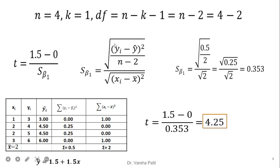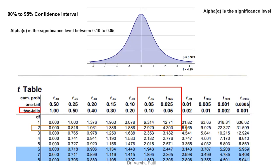The formula for the standard error of beta 1 is applied by putting in our already-calculated values: n minus 2 equals 2, and the summation values from our table. We get the standard error as 0.353. Substituting this, we get the t-value as 4.25. Now we check the t-table with degree of freedom equal to 2. The value 4.25 lies between 2.9 and 4.3 in the t-table, corresponding to a two-tail confidence interval between 0.10 and 0.05.